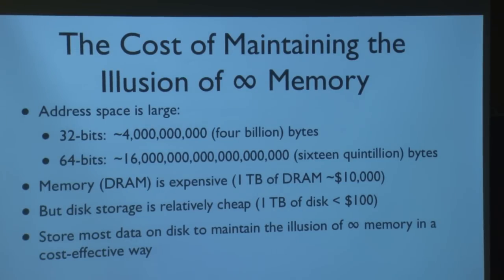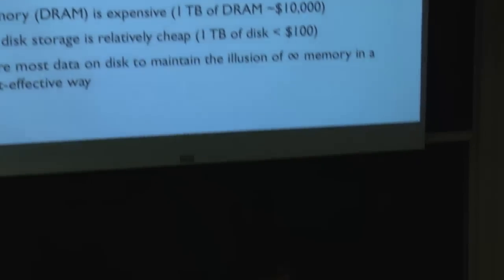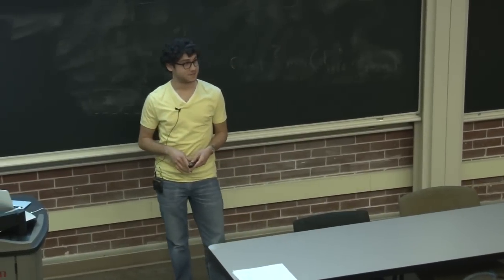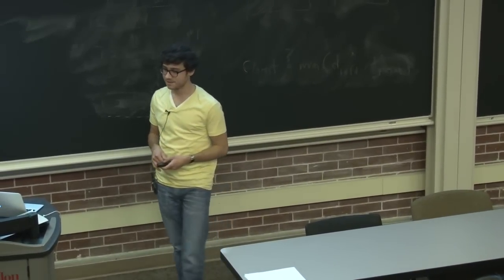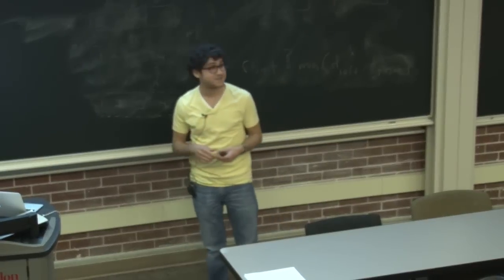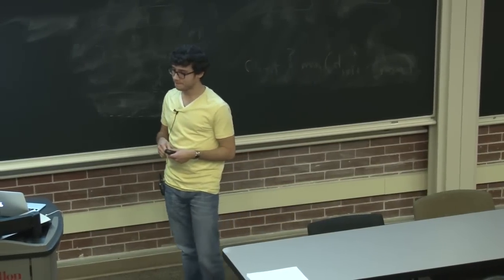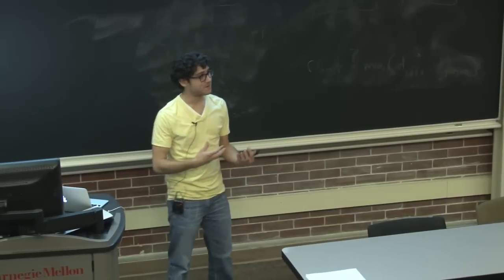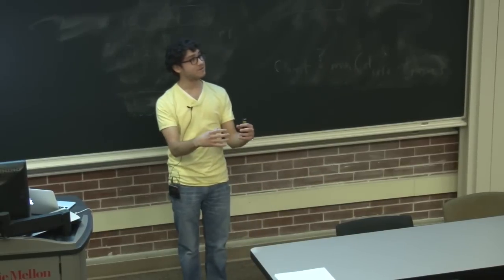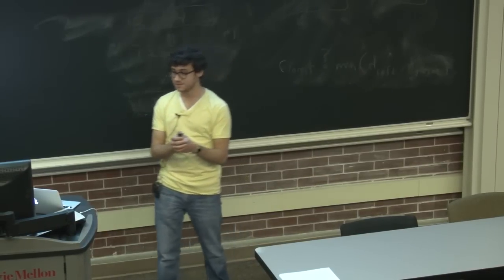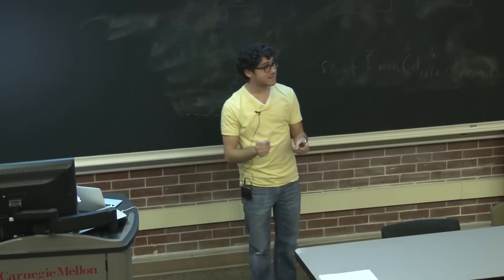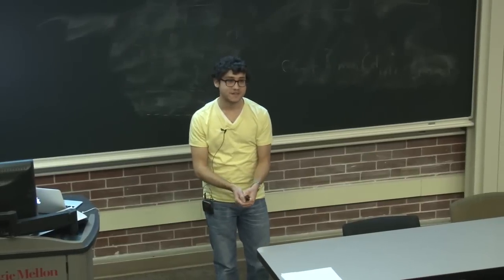Main memory technologies today are really expensive. The cost of around a terabyte of DRAM is in the ballpark of $10,000. But disk is actually really cheap — a terabyte of disk is less than $100 today. So what we want to do is use disk for data we're not using right now, and use memory only for a small amount — the data we're going to use soon. We can use the disk to help maintain this illusion of infinite memory.